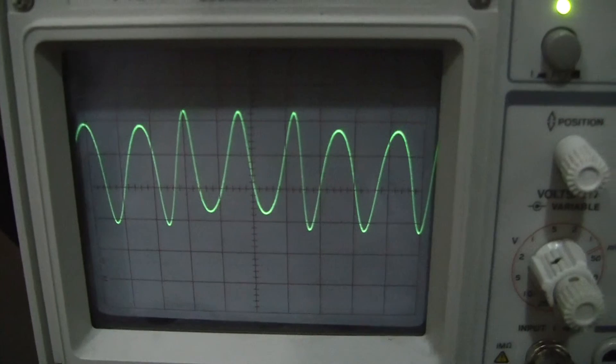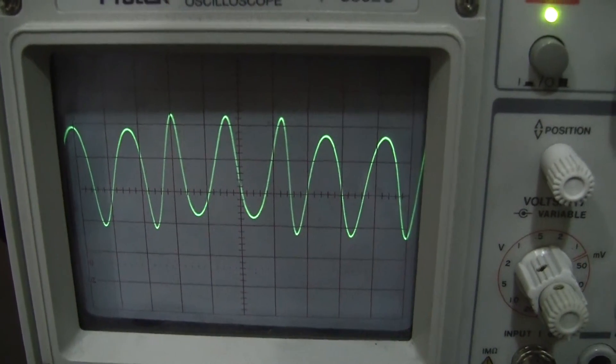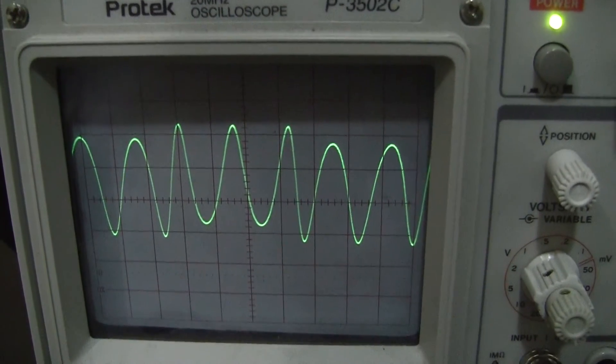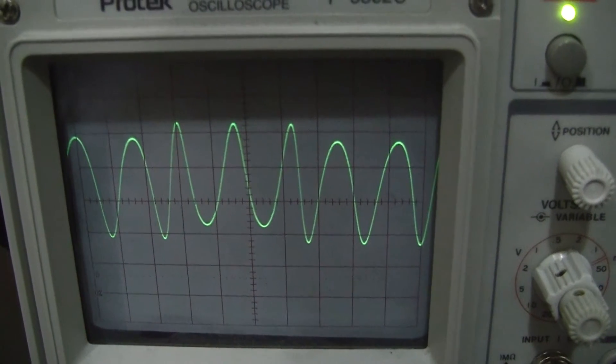This is with operator 2 set to 2 and operator 1 set to 1. In other words, the modulator has ratio 2 and the carrier has ratio 1.